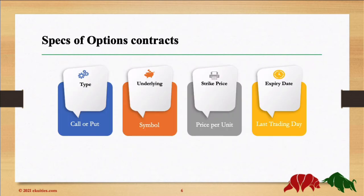We checked the specifications of an option contract. The first thing that needs to be specified: is it a call or a put? What's the underlying — the symbol of the underlying if it was a stock, an index, a commodity, or anything. Then the strike price, and finally the last trading day of the contract.